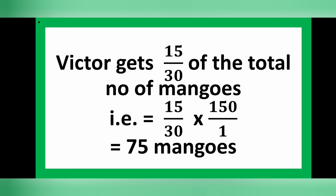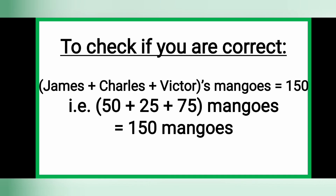Do you know that you can check whether you're correct? If you add the mangoes that James, Charles, and Victor have, you should get 150, since the total number of mangoes is 150. That is 50 plus 25 plus 75, which equals 150 mangoes. We are correct!